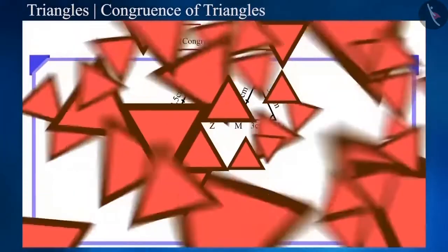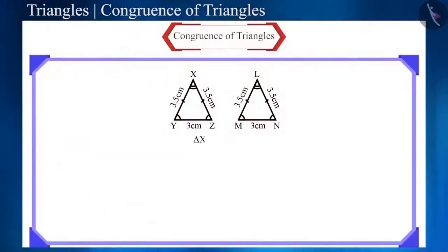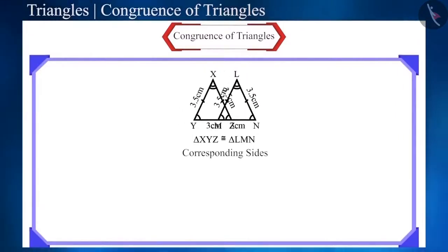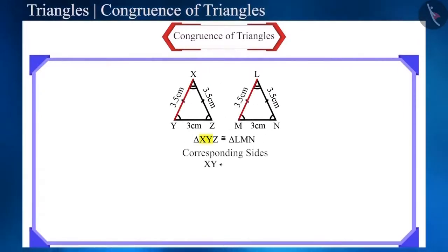Let's move on. Here, it is given that triangle XYZ is congruent to triangle LMN. Here, side XY covers side LM, side YZ covers side MN and side ZX covers side NL and we represent it this way.